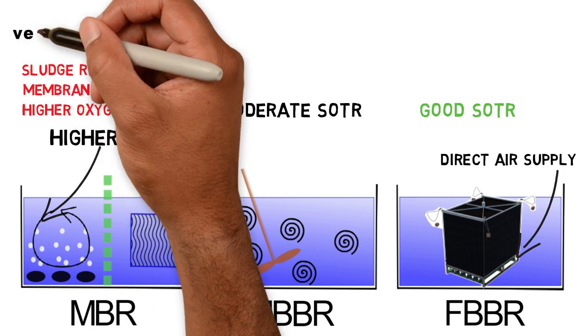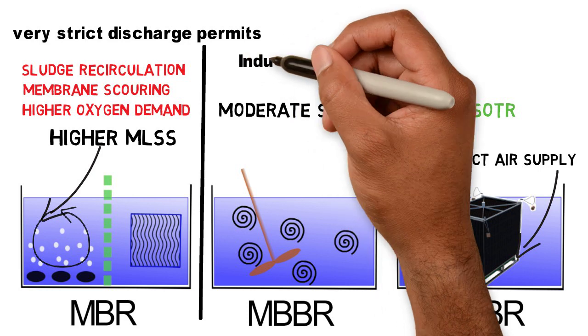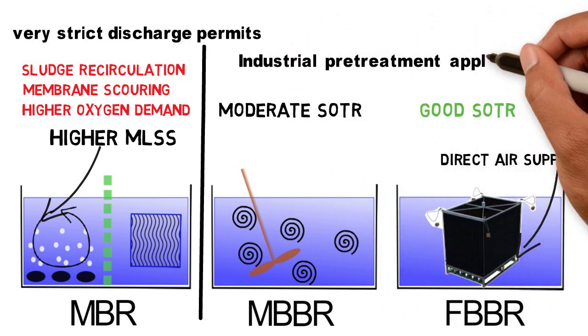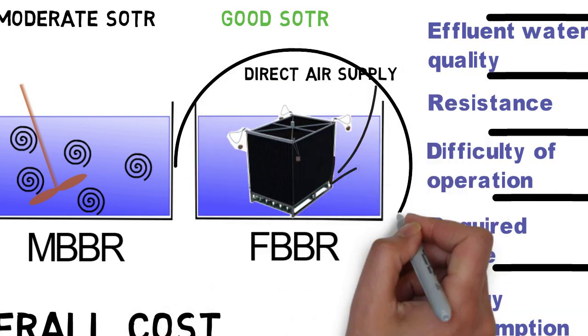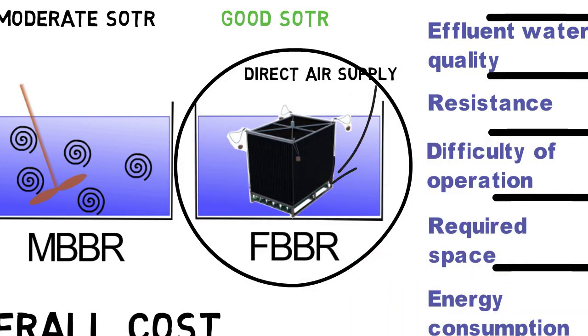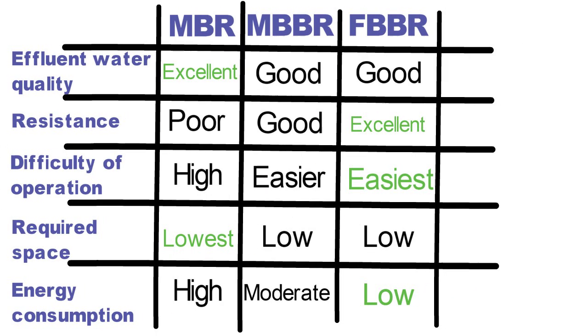All in all, MBRs are a good fit for applications that require a high quality water effluent. Instead, MBBRs and especially FBBRs are a good solution for pre-treatment of high BOD levels. Their resistance and forgiving design make them suitable for various industrial wastewater applications.